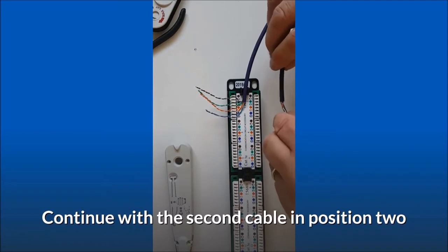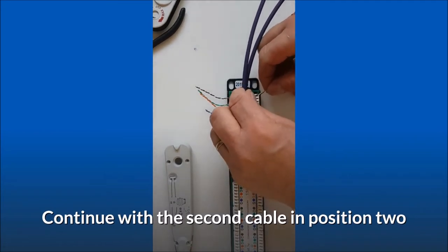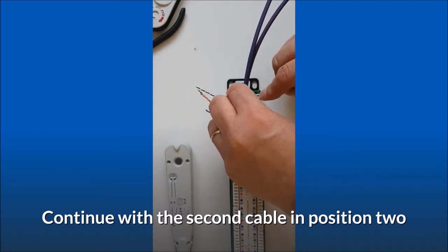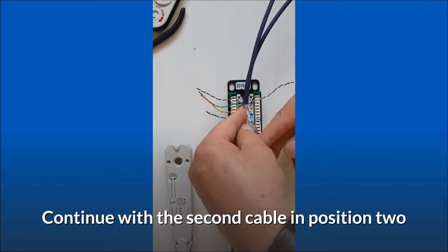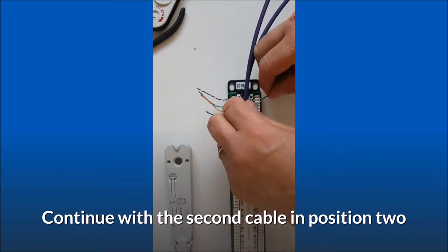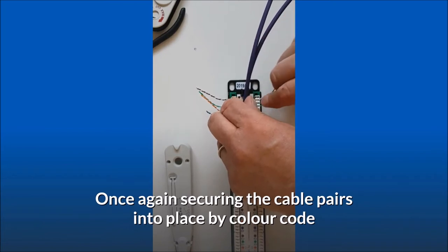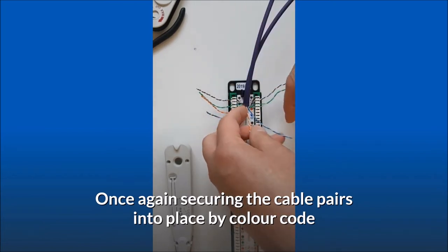Continue with the second cable in position 2. Once again, secure the cable pairs into place by color code.